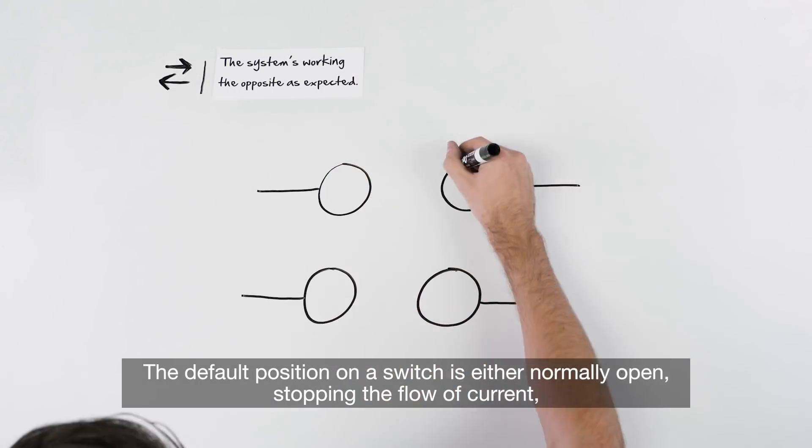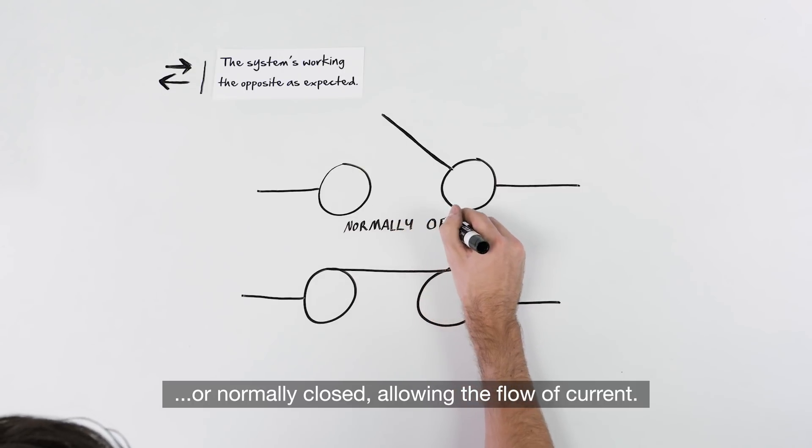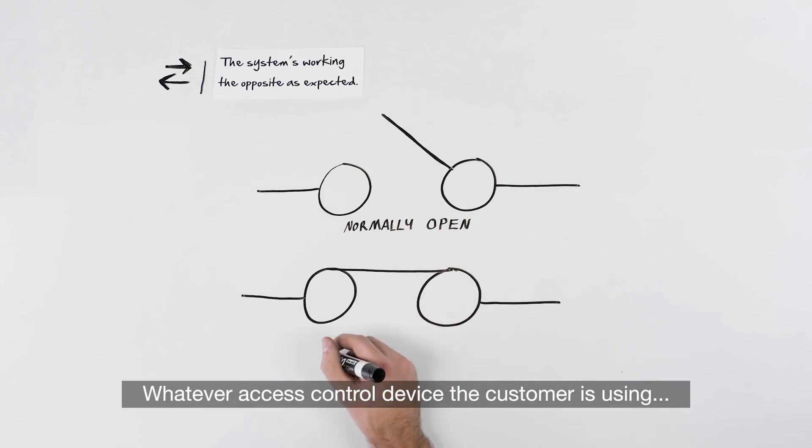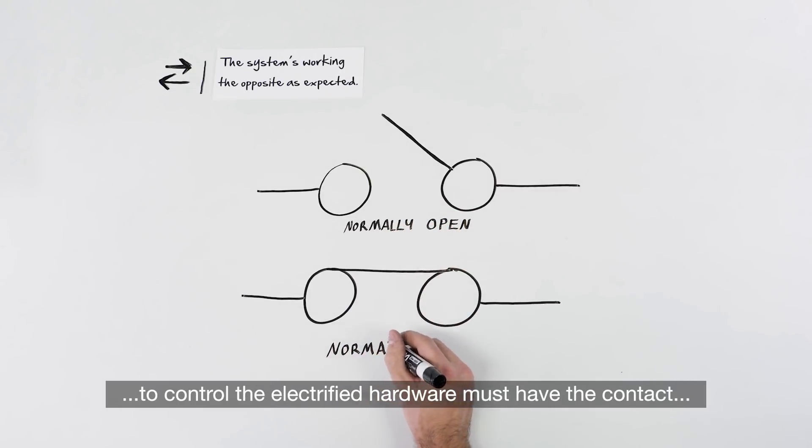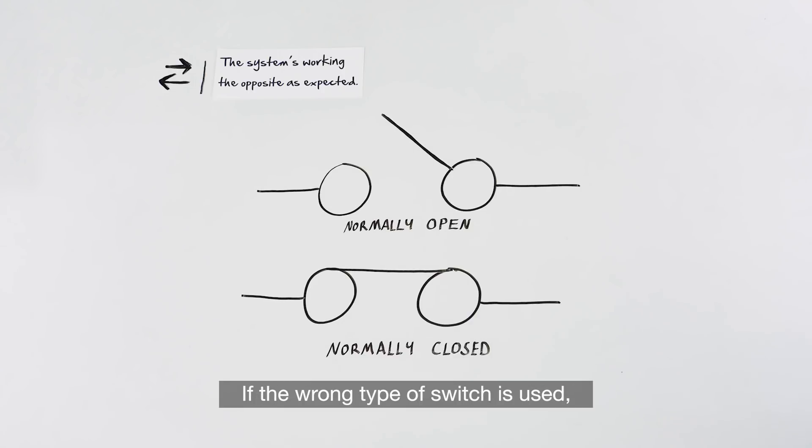The default position on a switch is either normally open, stopping the flow of current, or normally closed, allowing the flow of current. Whatever access control device the customer is using to control the electrified hardware must have the contact configuration required for proper operation of the hardware in use. If the wrong type of switch is used, then the system will operate backwards from expected.